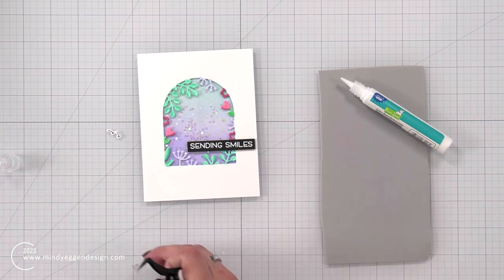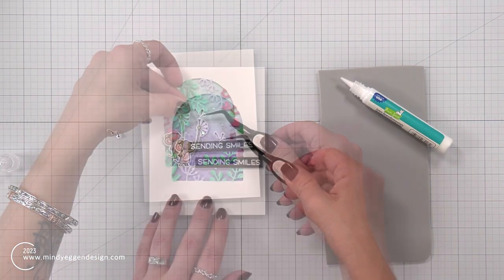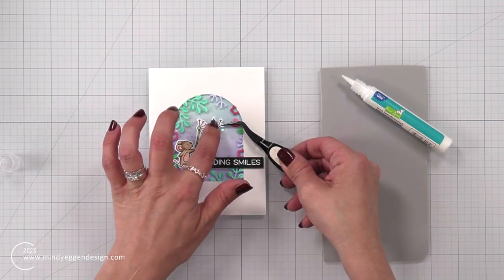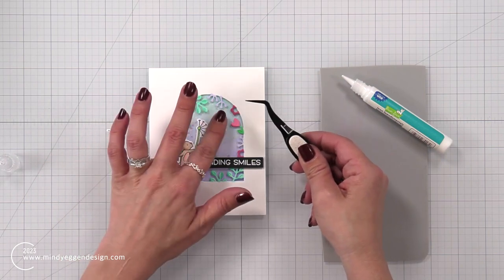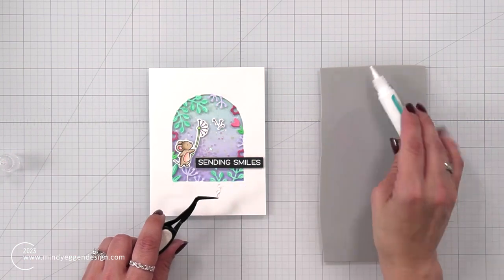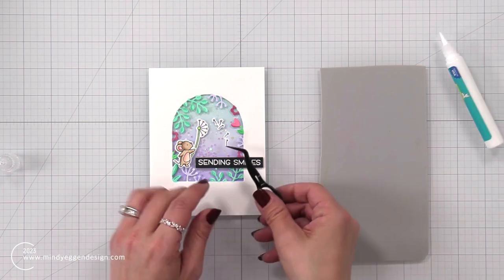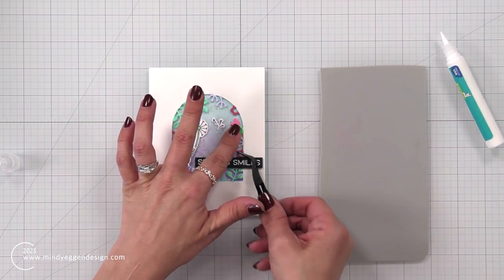And before I attach that, I'm going to add those kind of flyaway pieces in the window. So I'm just using my mouse there as a guide, added some liquid glue to those smaller dandelion pieces and added them just right on top of the acetate.